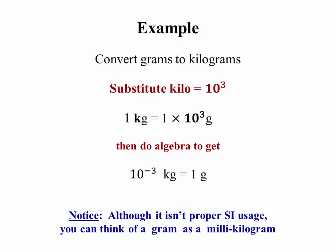Here's an example. If I want to convert grams to kilograms, I substitute 10 to the third for kilo. So 1 kilogram is 1 times 10 to the third grams. And if I want to know the conversion factor, it's that 10 to the minus 3 kilograms is 1 gram.